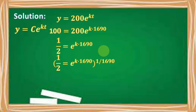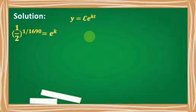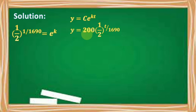We multiply the exponent of both sides by 1/1,690, giving us e^(k) = (1/2)^(1/1690). Knowing that c = 200 and e^(k) = (1/2)^(1/1690), we can now write the full decay equation: y = 200 · (1/2)^(t/1690).